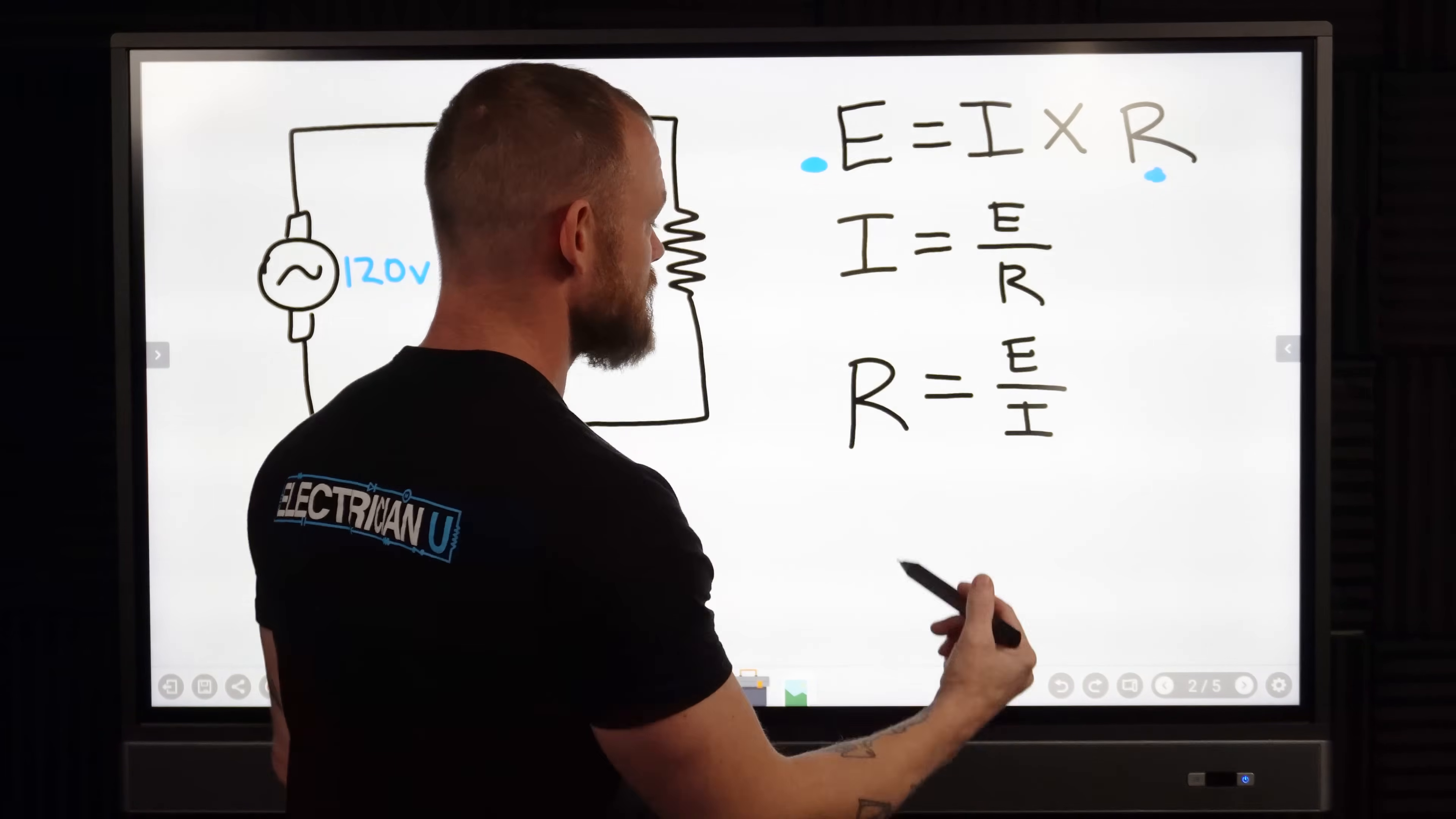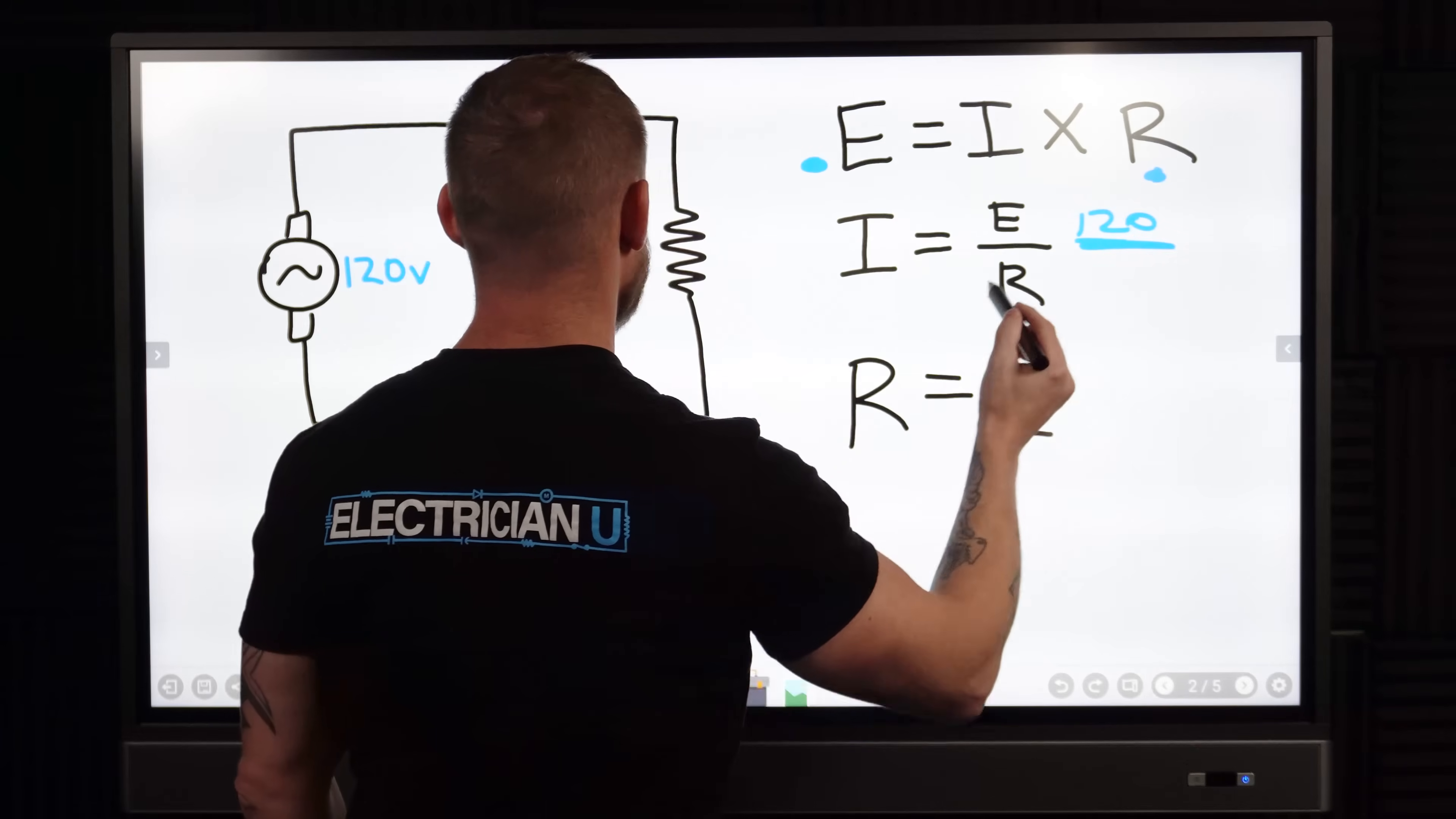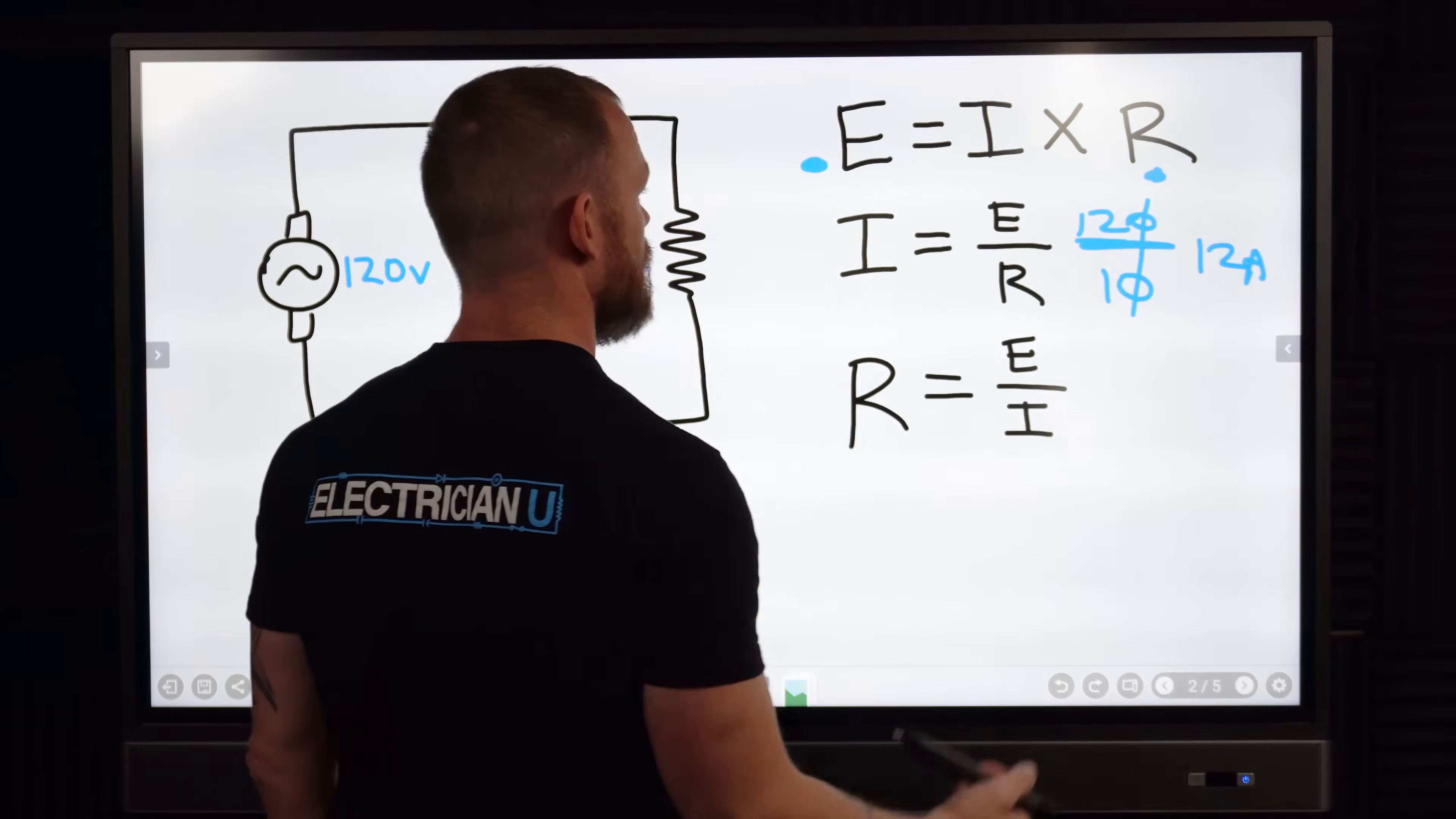So you would use I equals E over R and we know E is 120 and we know our resistance is 10 ohms. So zeros cancel out and we get 12 amps.